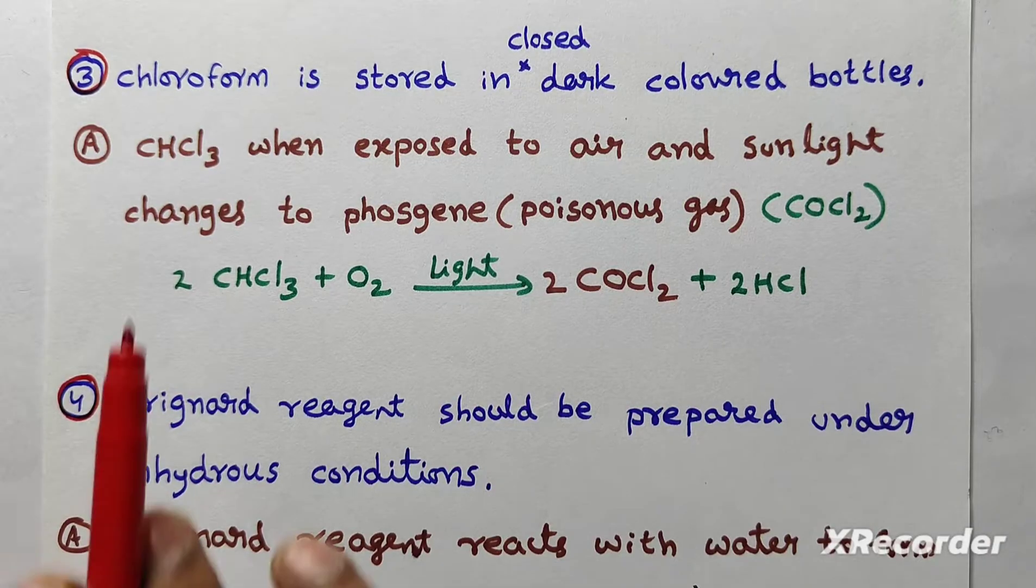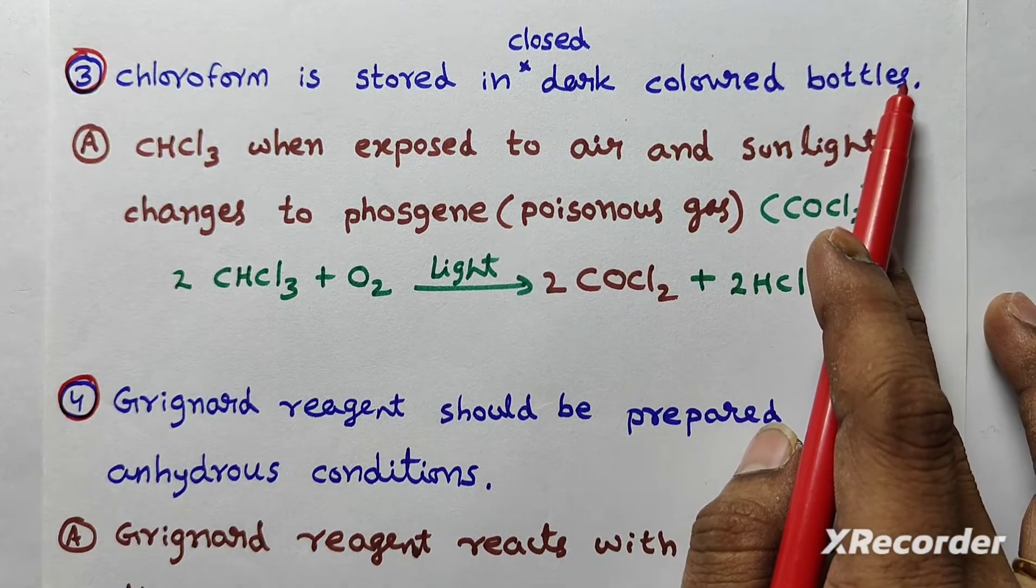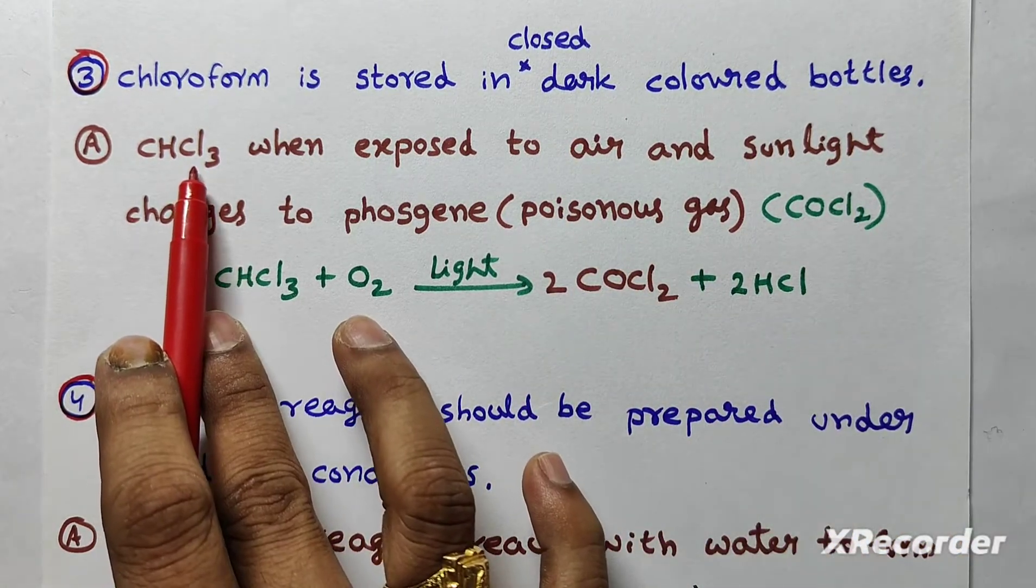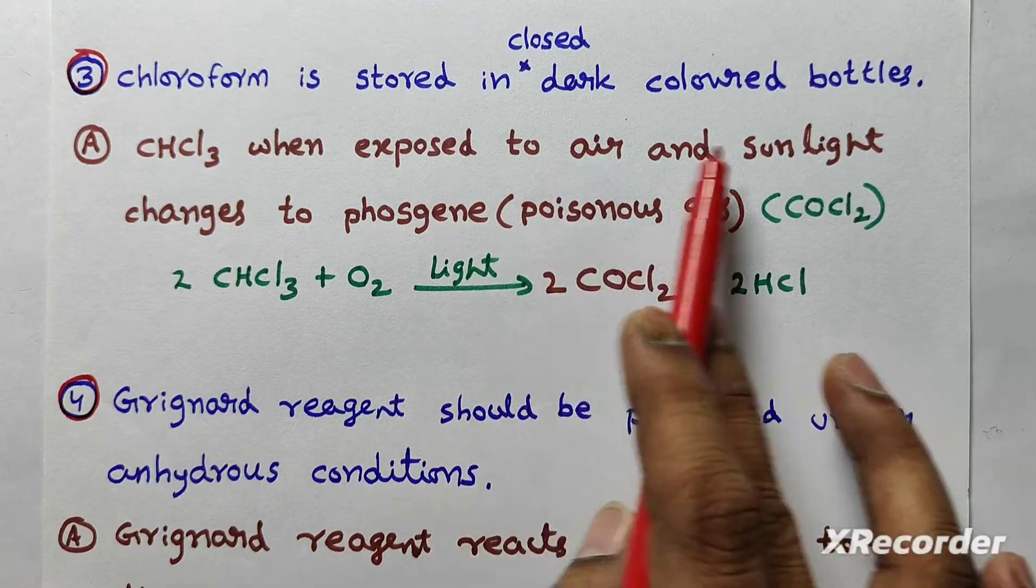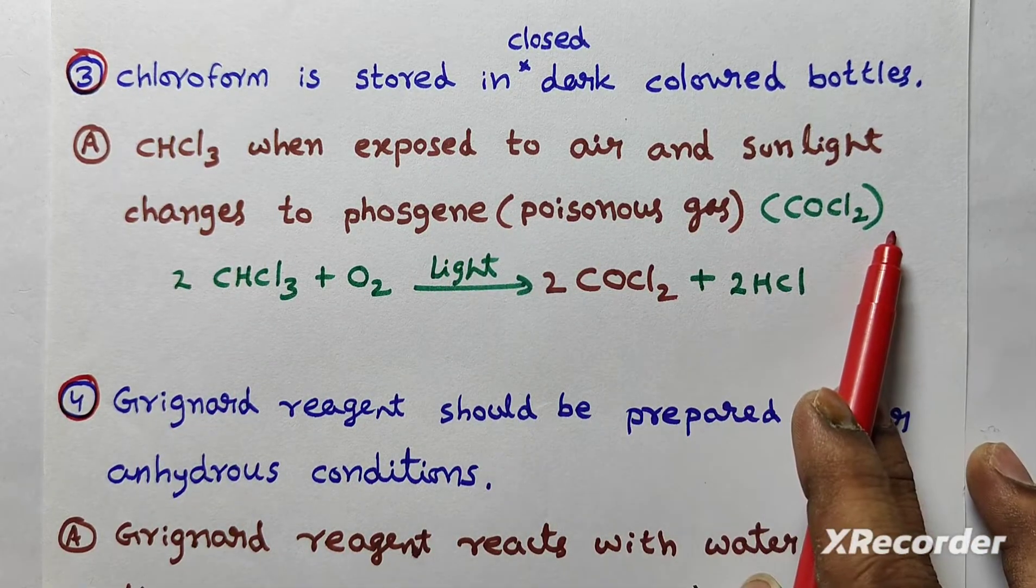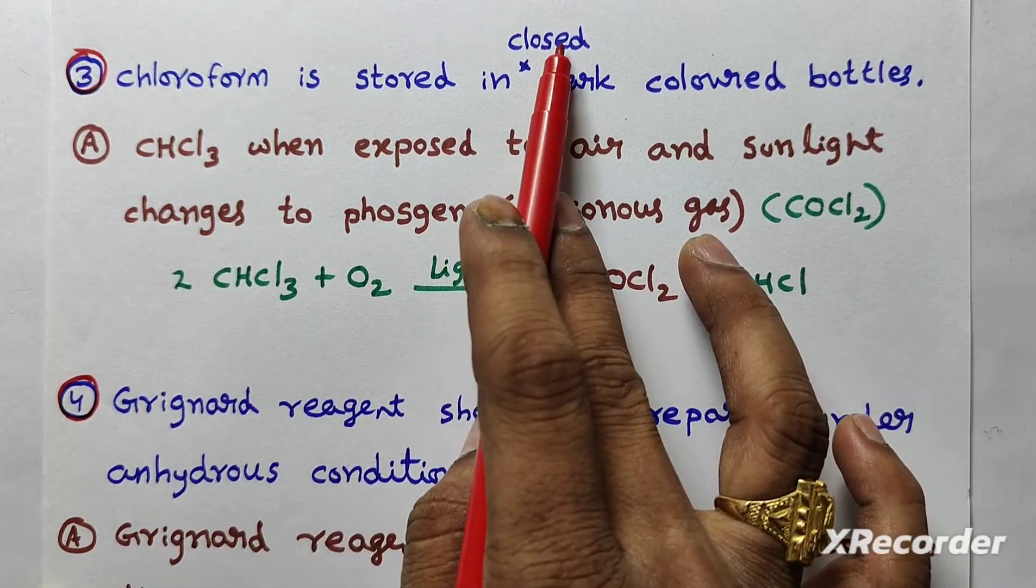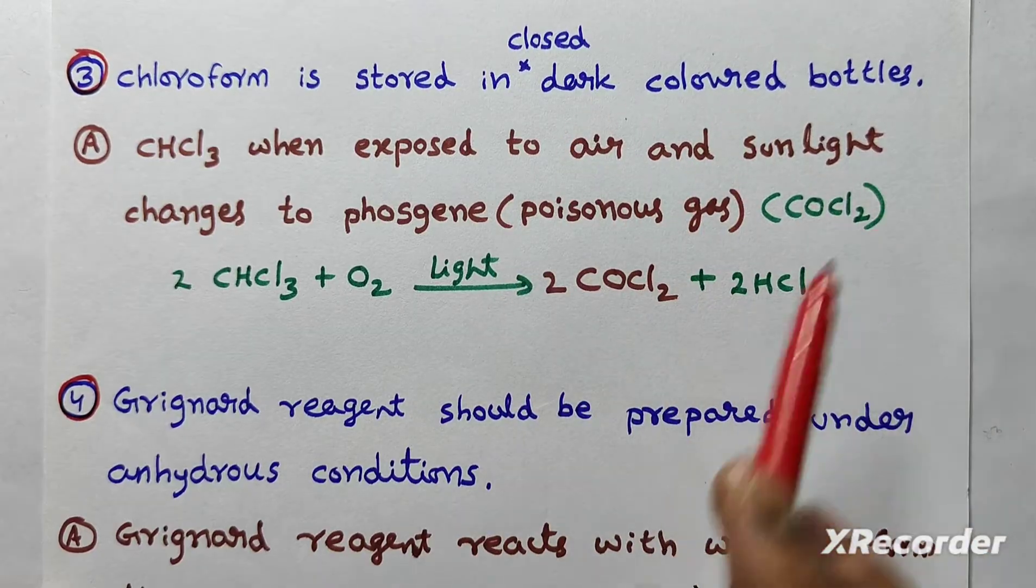Next question, chloroform is stored in closed dark colored bottles. Give reason. When chloroform is exposed to air and sunlight, it changes into phosgene, which is poisonous gas, COCl2. That is the reason we have to store chloroform in closed dark colored bottles.